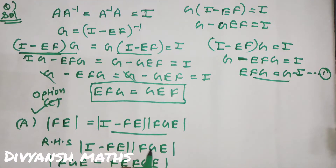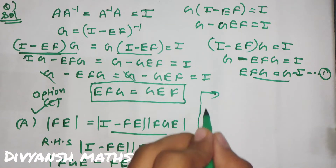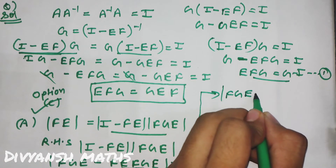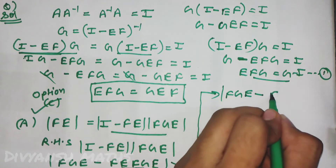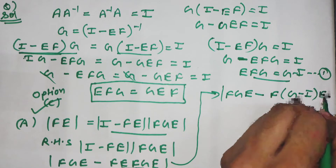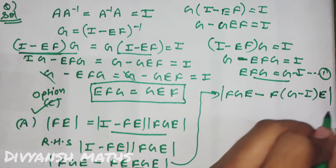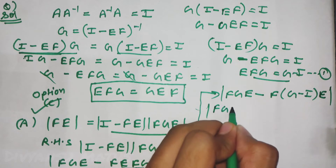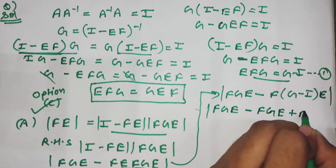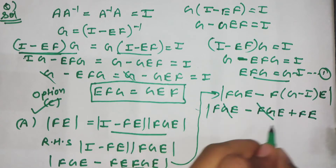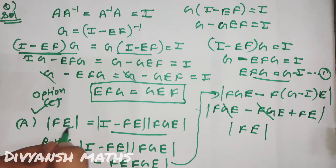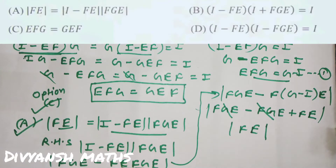Value substitute करते हैं: det(FGE minus F·(G minus I)·E) = det(FGE minus FGE + FE). यहां FGE cancel out हो जाता है, तो det(FE) बचता है। और यही LHS में दे रखा है। इस तरह option number A correct है।